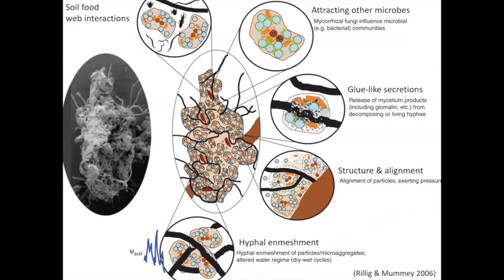First, I'm going to talk about soil aggregation. On the left we have a microscopic image of a conglomerate of soil particles with hyphae sticking out of it. The two key things in this diagram are the hyphal enmeshment on the bottom — with a soil water potential symbol — and on the right, the glue-like secretions. Hyphae enmesh soil particles and emit glue-like secretions that hold them together, while also attracting other microbes that can form bacterial films.